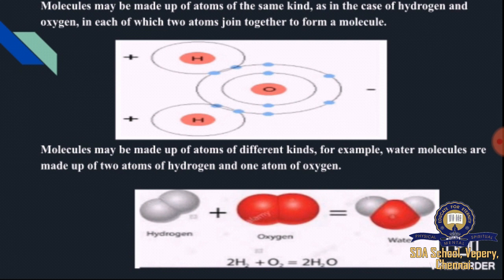Atoms join together to form molecules. For example, if we consider hydrogen and oxygen as two atoms — we take two atoms of hydrogen and one atom of oxygen — these can combine to form a molecule known as water. So 2H₂ + O₂ gives 2H₂O, which is known as the water molecule. When two atoms join together, we can form a molecule, and here the molecule obtained is water, H₂O.